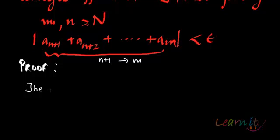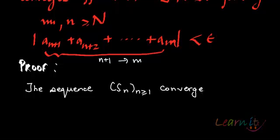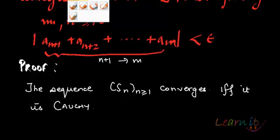So the sequence Sn, n ≥ 1, converges. I am writing the series as the sequence of partial sums. So I know the sequence, any sequence, converges if and only if it is Cauchy.